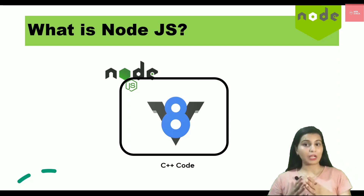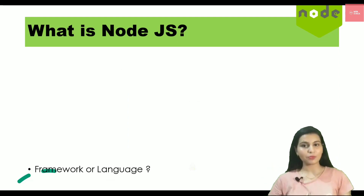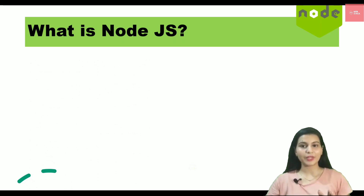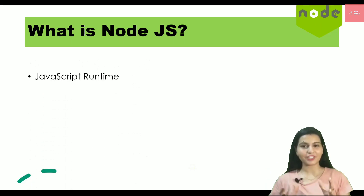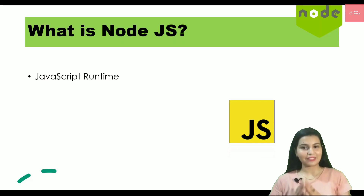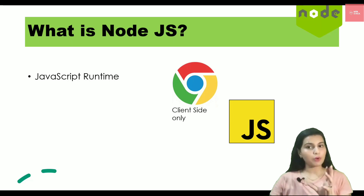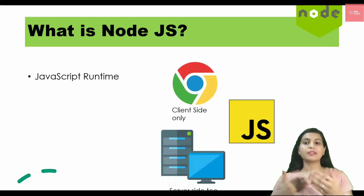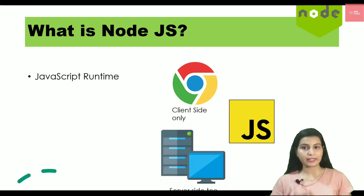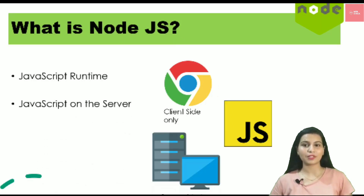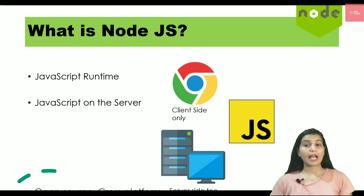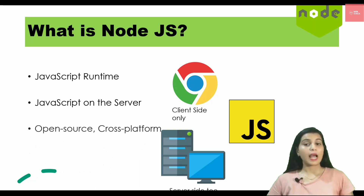Node.js is neither a framework nor a language — it is called a JavaScript runtime. A runtime is simply any environment provided to a program so that it can execute. Node.js provides a platform or environment for JavaScript code, which was earlier meant only for browsers, to run outside the browser as well — on servers. Node.js is also open source, cross-platform, and very scalable.